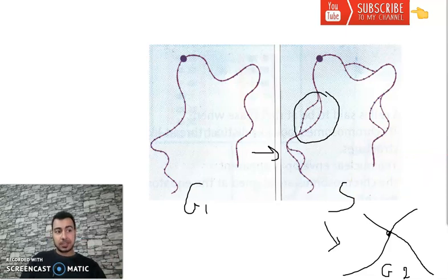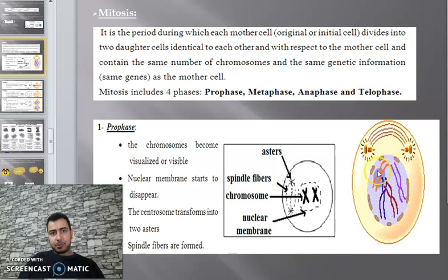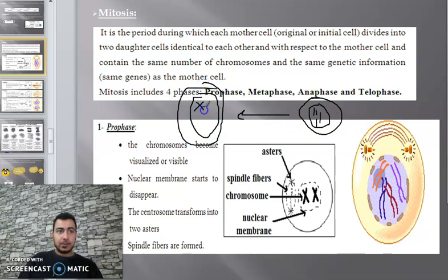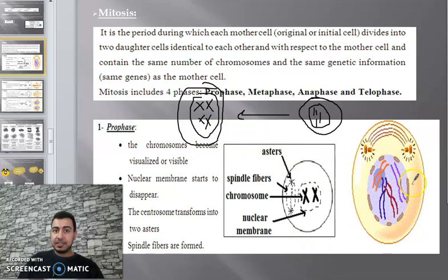Now what happens during prophase? Let's start with mitosis. This is a cell with 2n equal to 4. During interphase, the nucleus has one, two, three, four chromosomes. The cell duplicates and enlarges — every chromosome becomes two chromatids, but 2n still equals 4. During prophase, the nuclear membrane disappears.